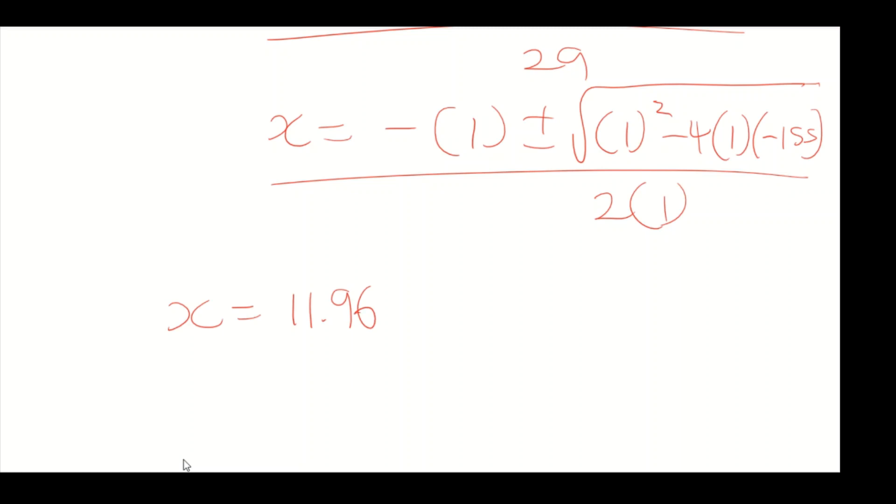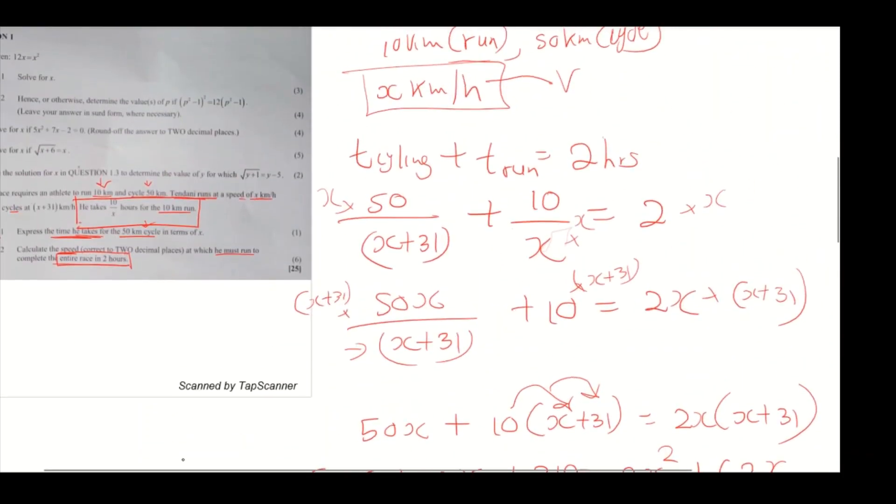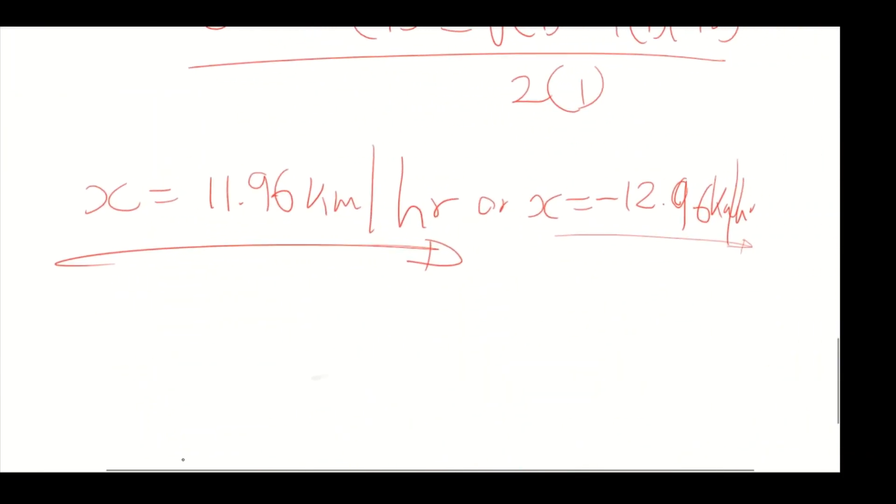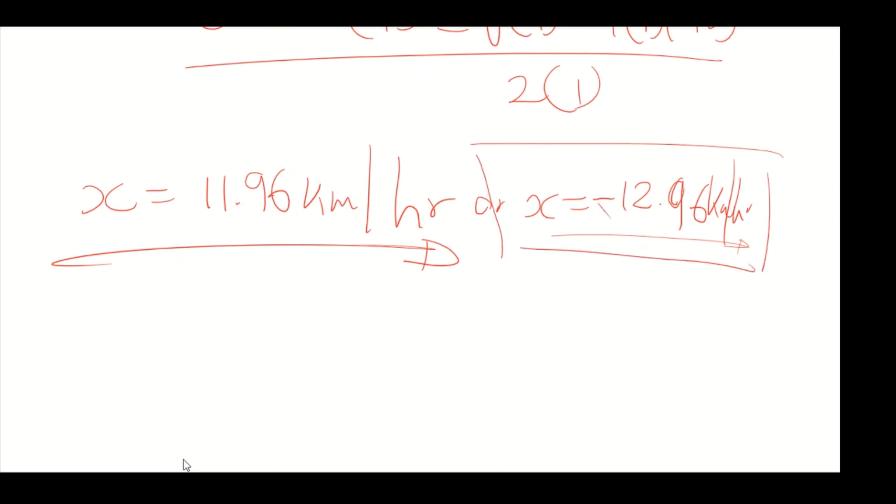The x values you need to find are x equals 11.96 kilometers per hour or x equals minus 12.96 kilometers per hour. Because the question asks for speed, which doesn't have direction, we can't consider the negative solution. So we consider the positive one: 11.96 kilometers per hour.